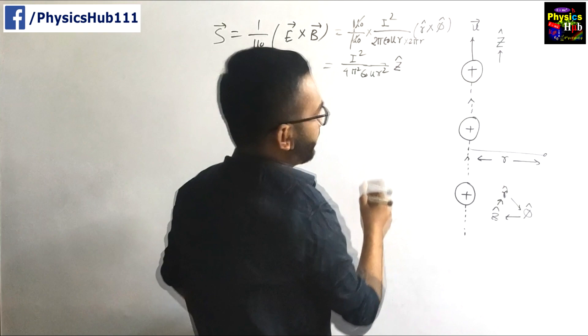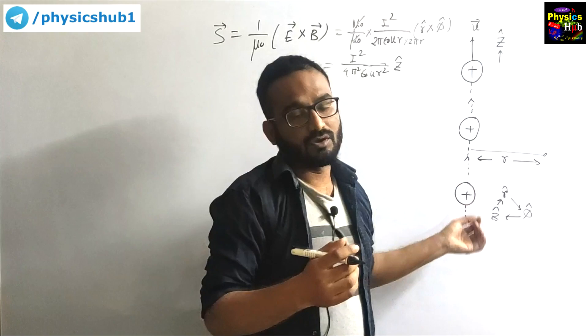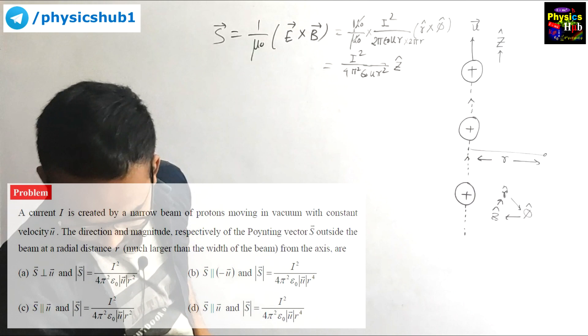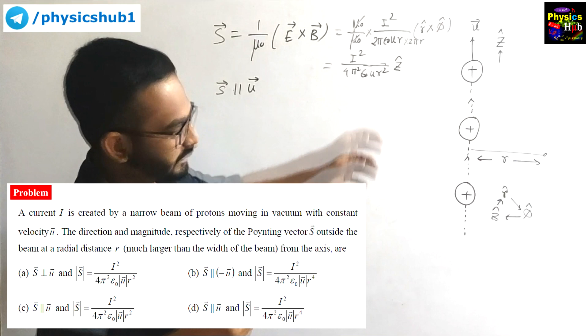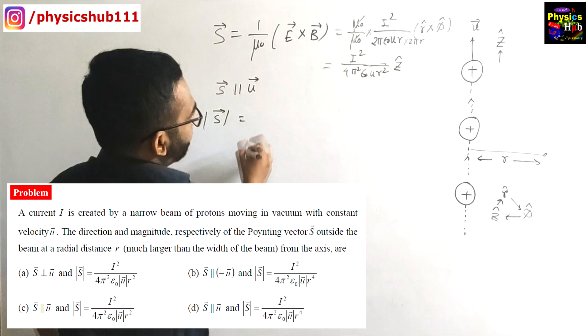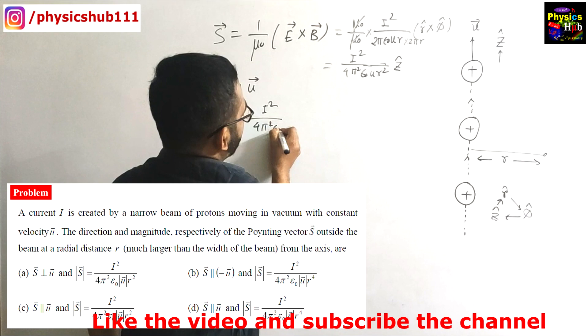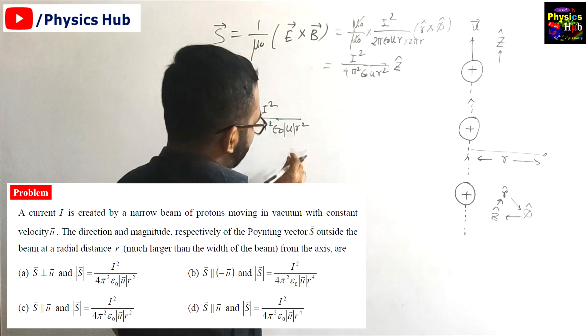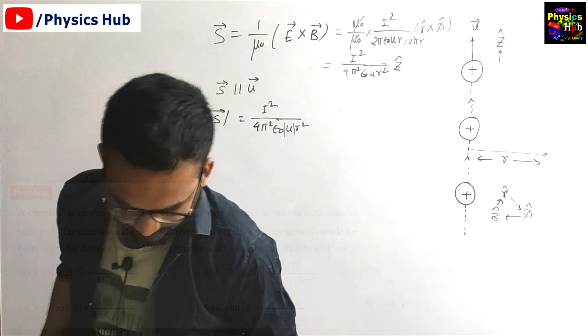That is what, the Poynting vector is directed in the z cap direction, and it is also the direction of the current or the direction of movement of protons. So here you can say what are the options: S is parallel to u, because they are in the same z cap direction. And the modulus value of S is equal to I squared by 4 pi squared epsilon naught u r squared. It is matching with option C, I squared by 4 pi squared epsilon naught u r squared.